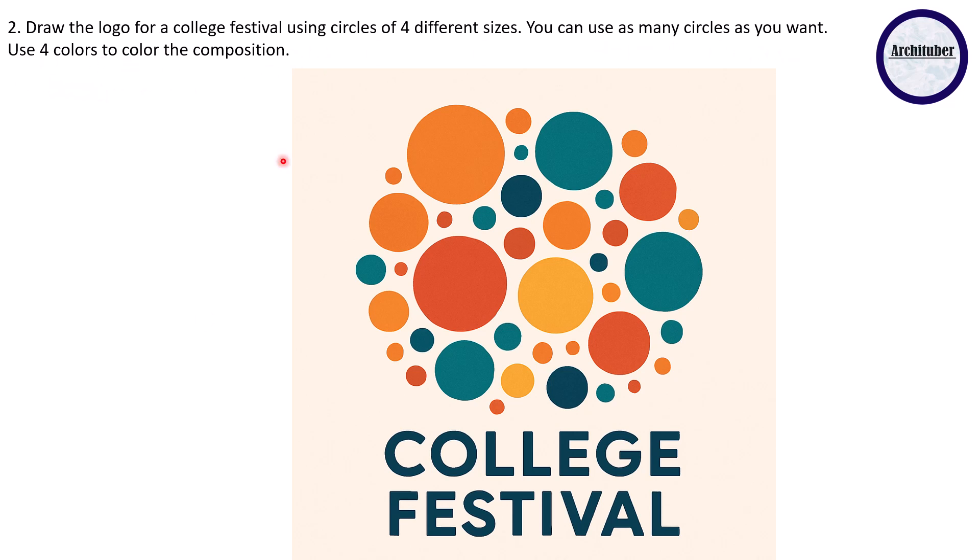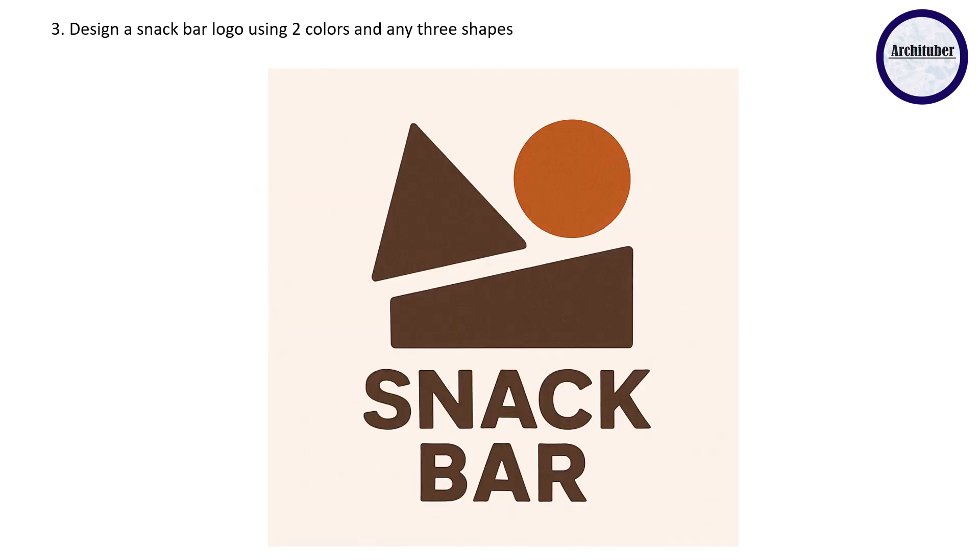Then second question: draw the logo for a college festival using circles of four different sizes. You can use as many circles as you want, use four colors to color the composition. Here the logo is not very attractive I know, but what they have done is they have done different sizes of circles and then very colorful circles so it gives that illusion of festival or if you see the firecracker in the sky how it creates a pattern - they have shown something like that. So it looks festive.